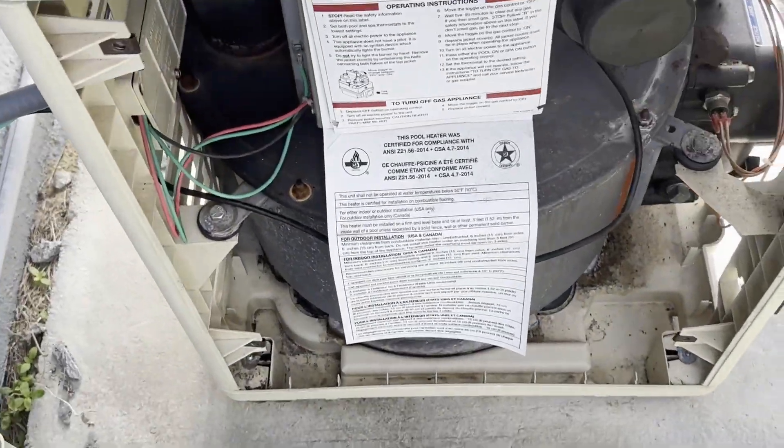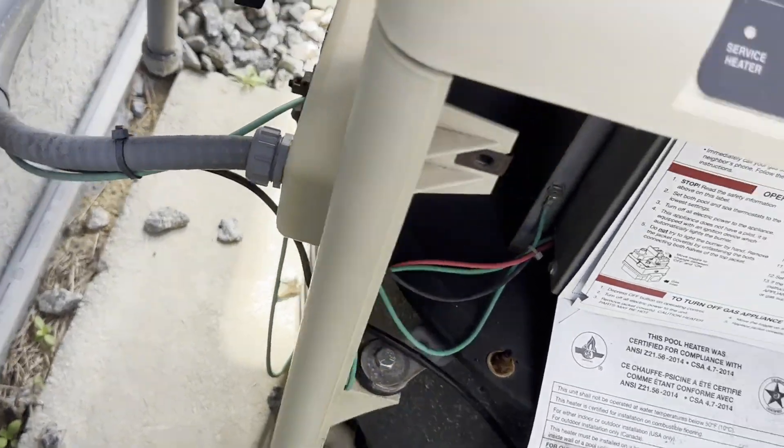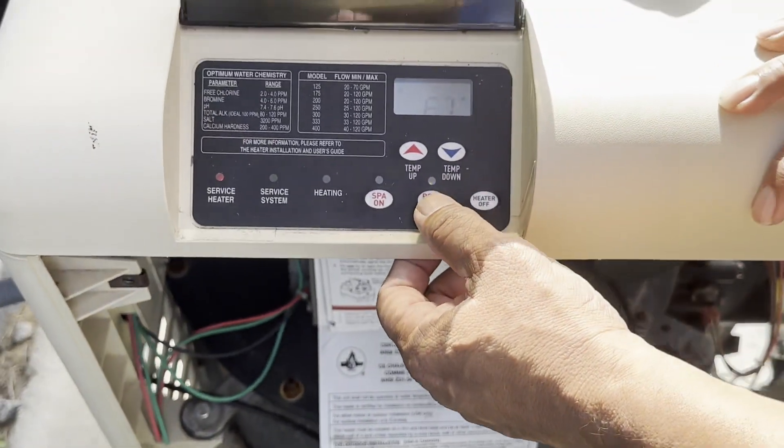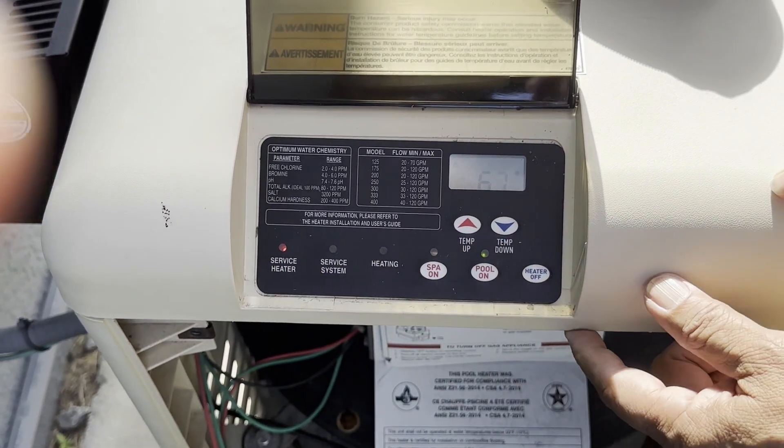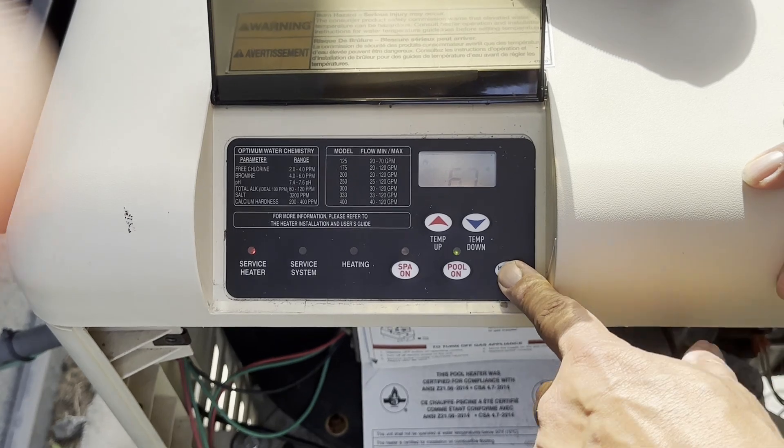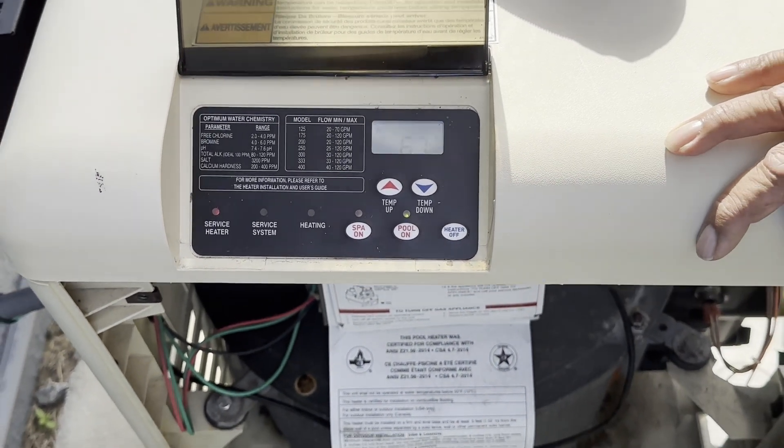Now what we're going to do is we're going to turn the gas back on and the heater light is still on. So we're going to have to reset the system to get it to kick back on.